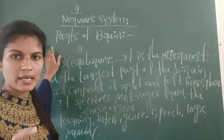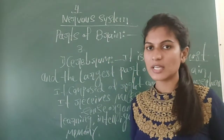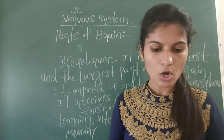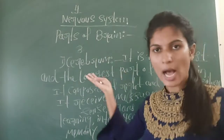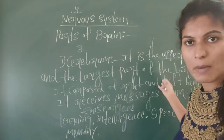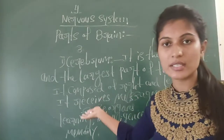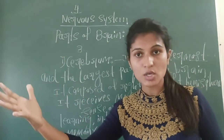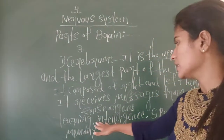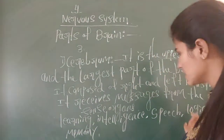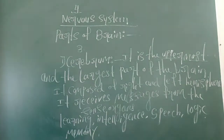So to recap: there are three parts of the brain — cerebrum, cerebellum, and medulla. The cerebrum is the uppermost and largest part, composed of right and left hemispheres. It receives messages from the sense organs and is responsible for learning, intelligence, speech, logic, and memory.